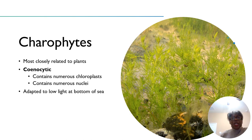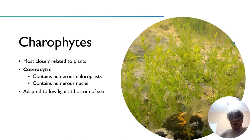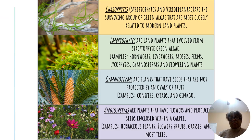Charophytes are said to be coenocytic, meaning they contain multiple or numerous chloroplasts and multiple or numerous nuclei. They have adapted to very low light conditions because they live at the bottom of oceans, seas, lakes, or wherever they may be located. Charophytes are the algae most closely related to land plants — remember they are coenocytic, containing numerous chloroplasts and nuclei, and adapted to low light, which is necessary since they get limited sunlight to perform photosynthesis.